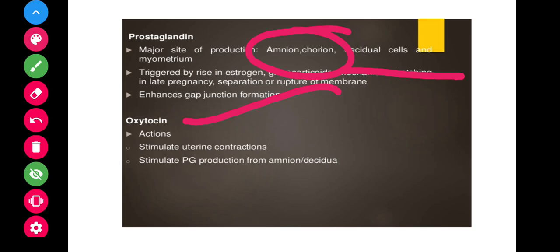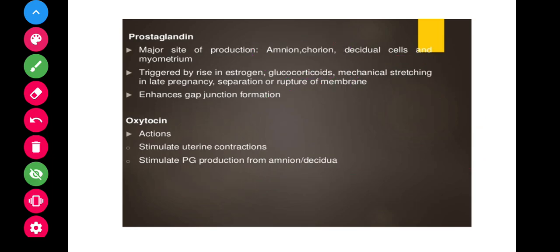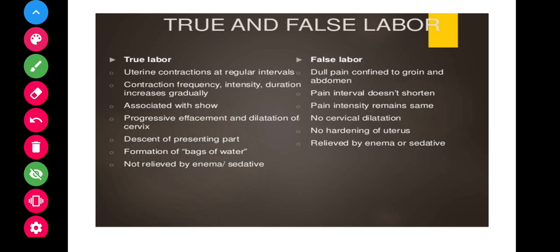Oxytocin plays a very important role during labor. It stimulates uterine contractions and stimulates prostaglandin production from the amnion and decidua, making the delivery process easier. If the woman is not getting uterine contractions or pains, oxytocin should be administered during labor.